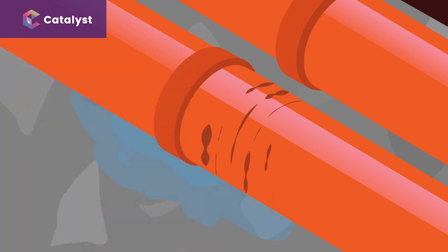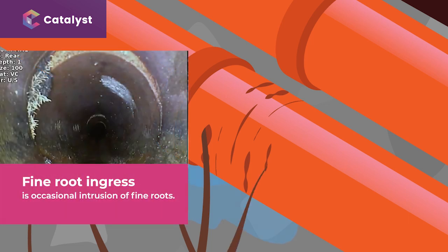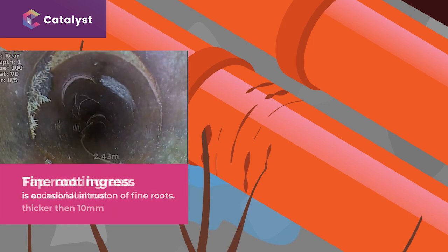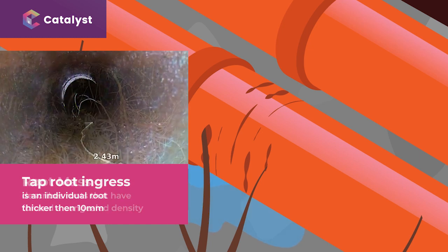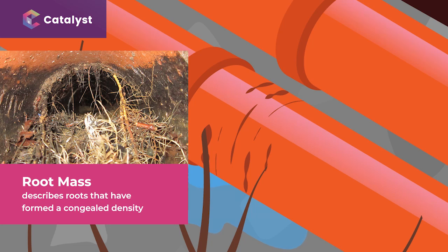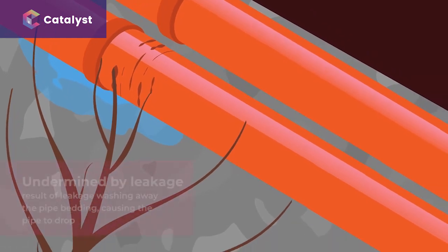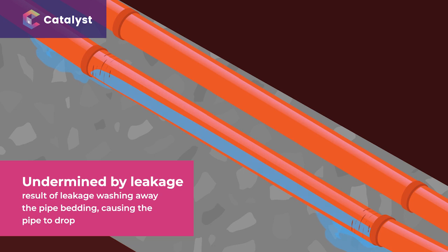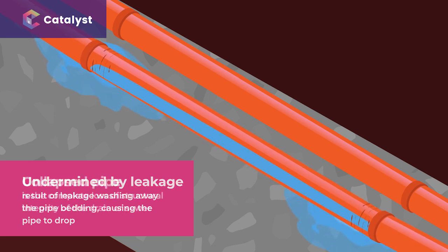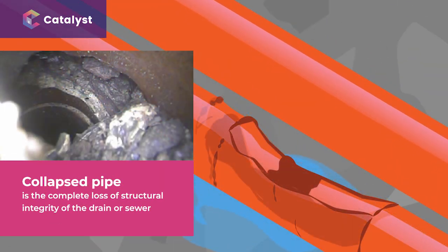Root ingress is coded in three main ways. Fine root ingress is occasional intrusion of fine roots. Tap root ingress is an individual root thicker than 10 millimetres. Root mass describes roots that have formed a congealed density. Undermined by leakage is where a drain or sewer is leaking and the escaping water washes away the bed of the drain or sewer causing it to drop. Collapsed pipe is a complete loss of structural integrity of the drain or sewer.